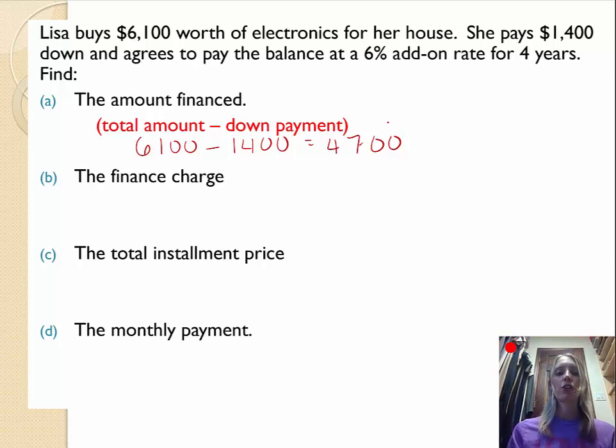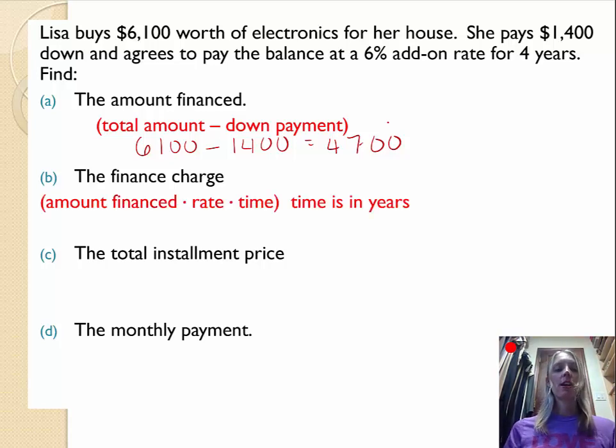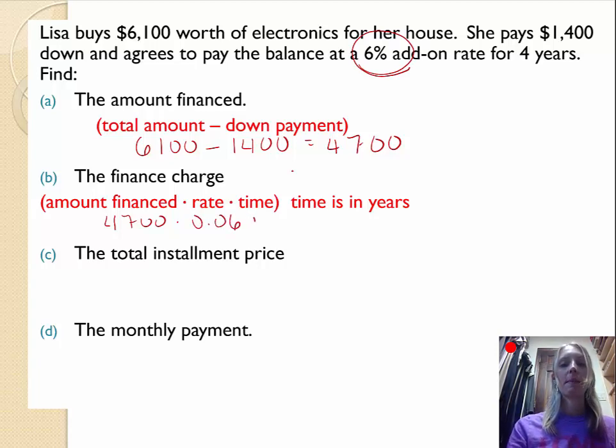Next, the finance charge. Do you remember how to calculate finance charge? That's going to be the amount financed, so that's $4,700 times that interest rate. Right here, 6%. Remember, we need to convert it to a decimal by dividing by 100 times time, she agreed for four years. When we multiply all this together, that's going to tell us our finance charge and that's going to be $1,128.